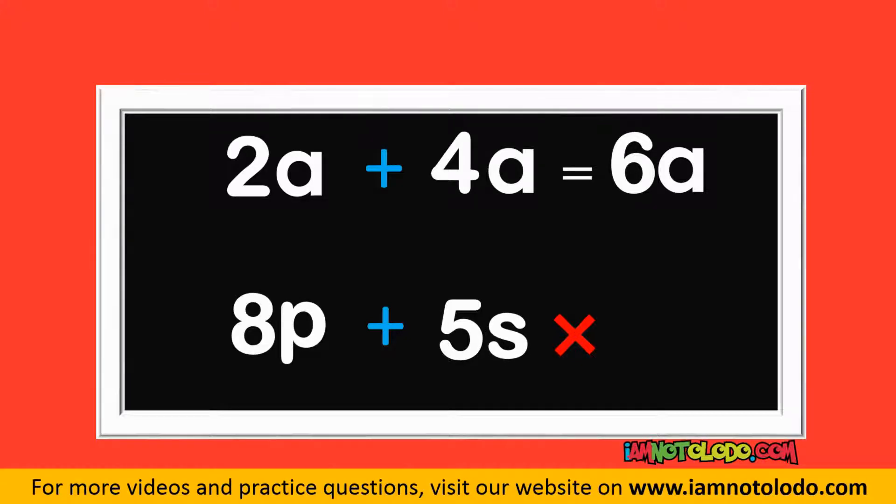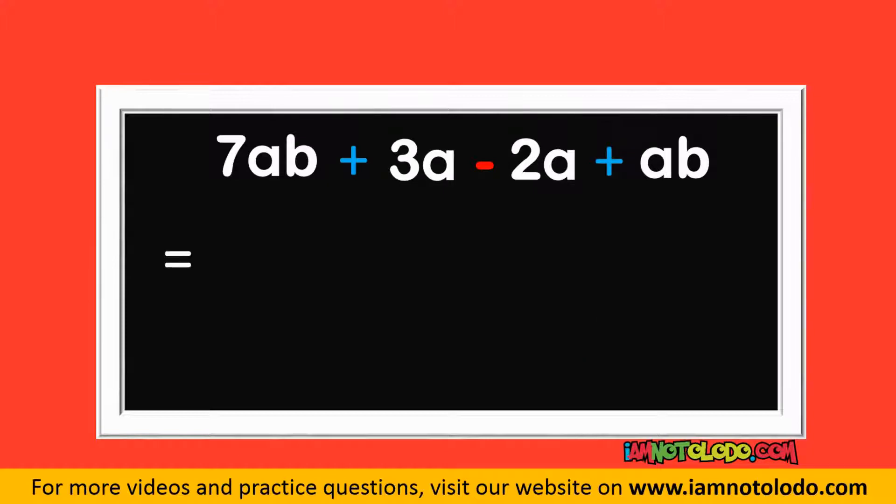So the first thing we have to do is to collect like terms. That is, the ones that have the same alphabet, we write them together. The first one is 7AB. Which one has AB? This one. Carry it with a sign. There is a sign in front of it, so write it with a sign: plus AB.